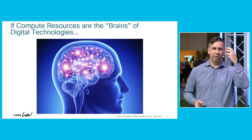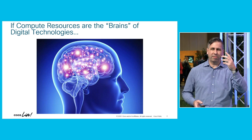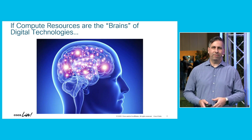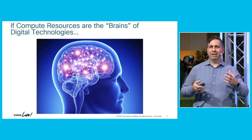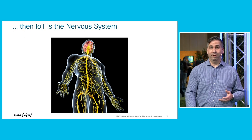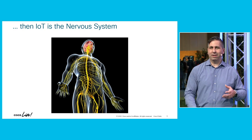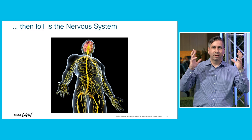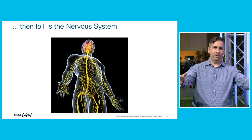If we do that, then naturally compute resources would compare to our human brain. That's where we gather our memories, do all our processing, and do our learning. However, our brain is very abstract and it needs a conduit to interact with the physical world — and that conduit is our nervous system. Effectively, that's what IoT is all about: connecting digital compute resources, the brains of digital technologies, with the physical world.